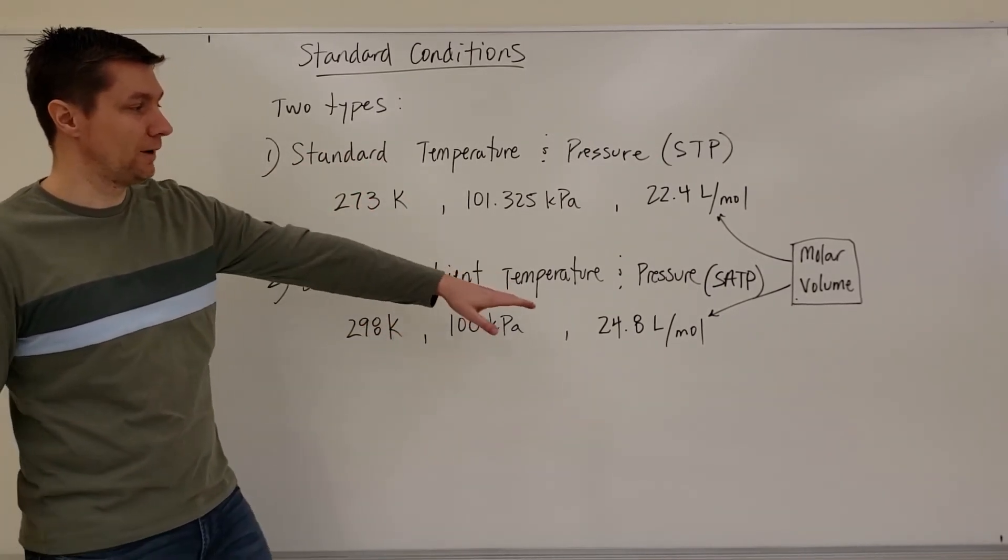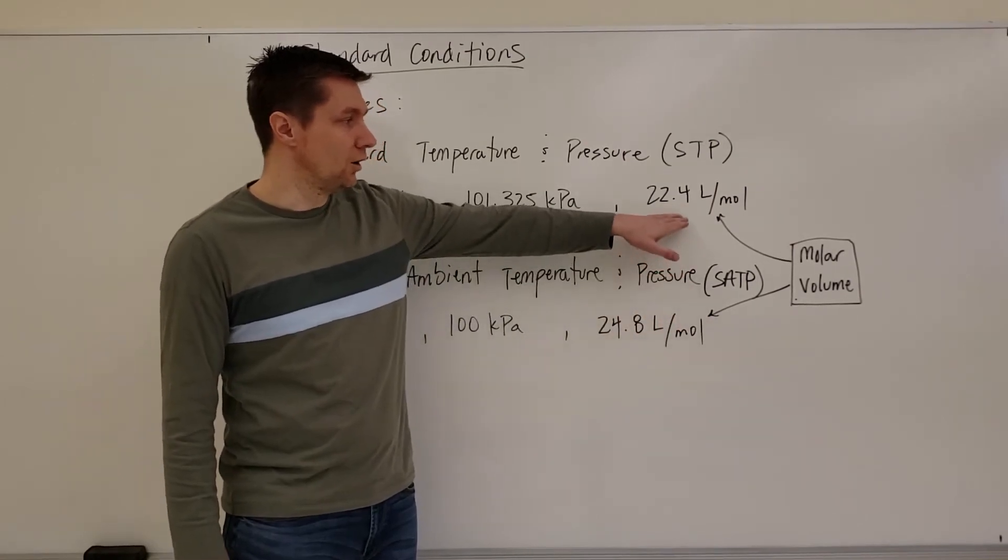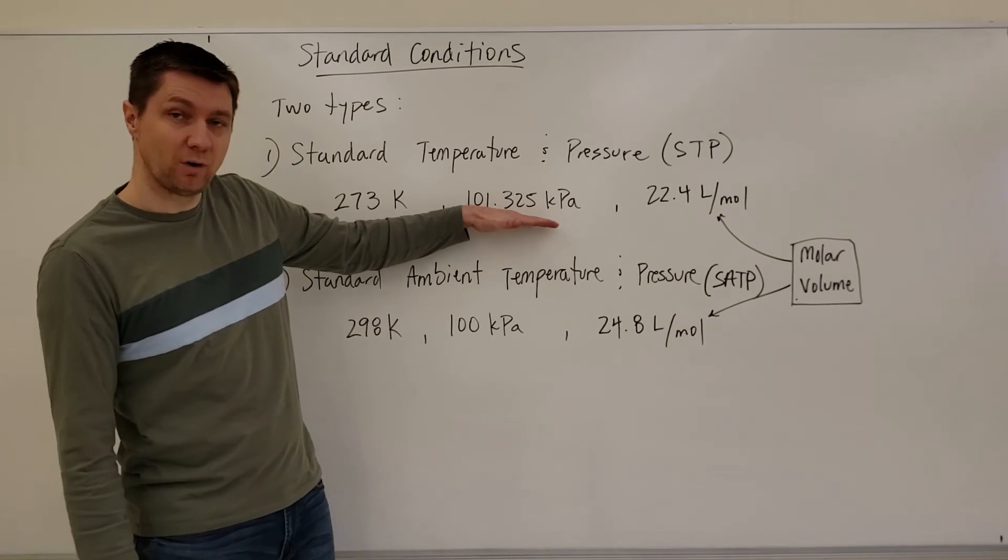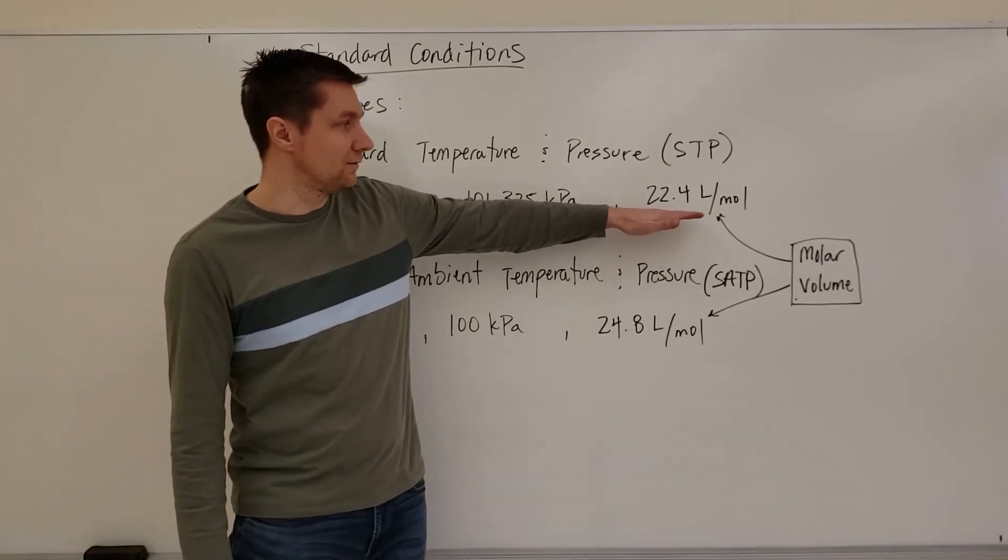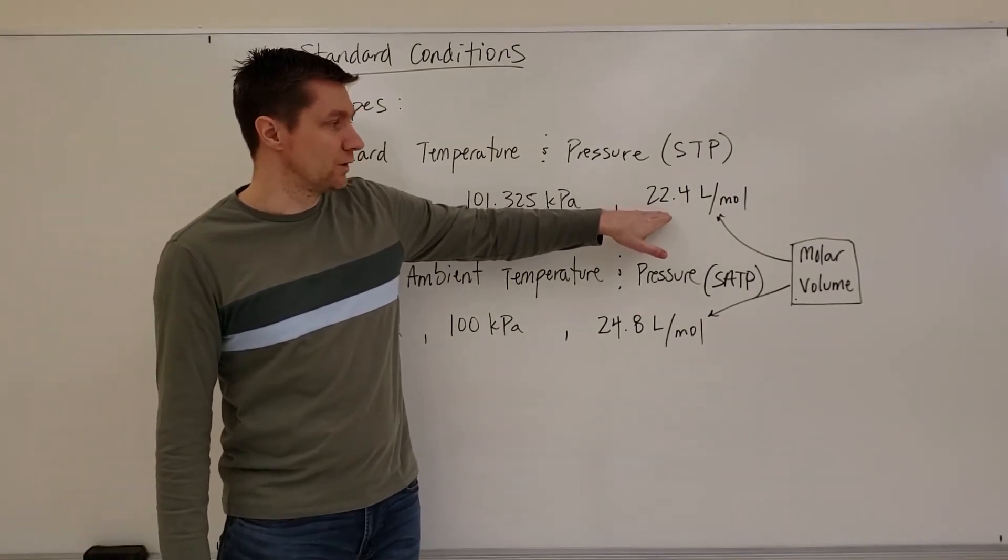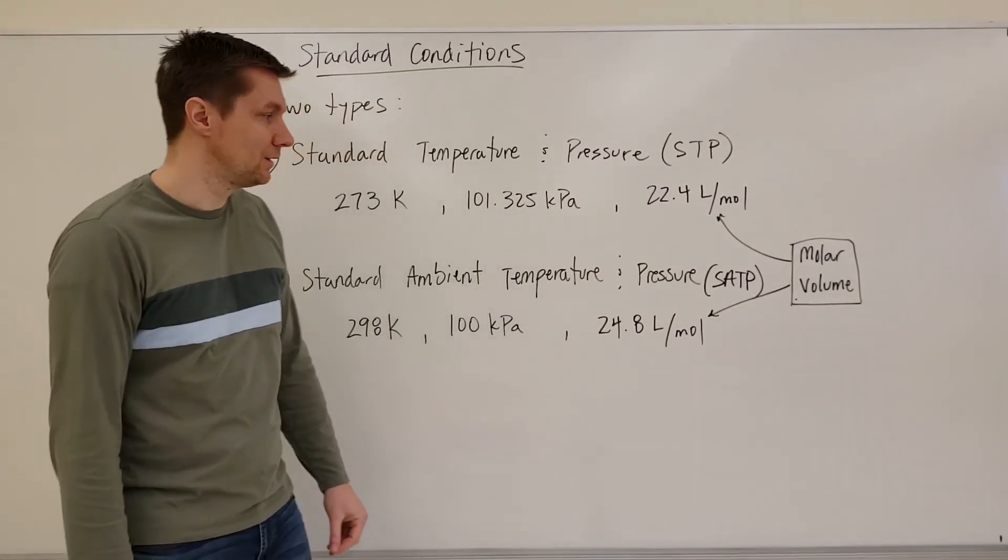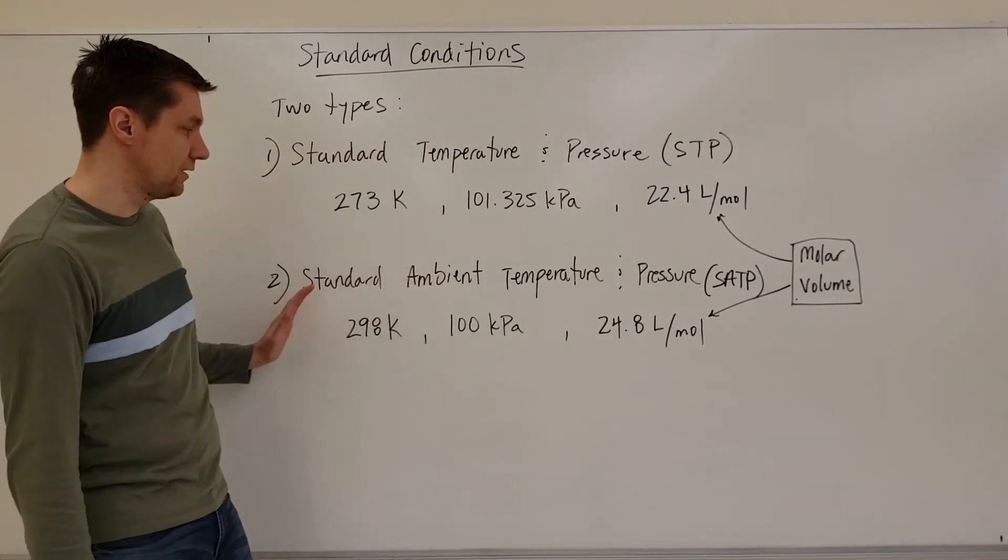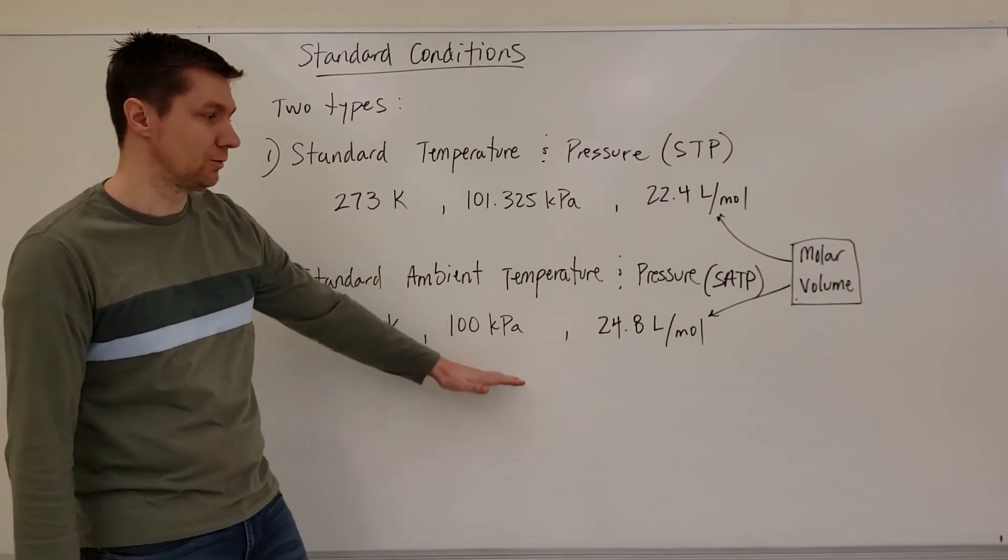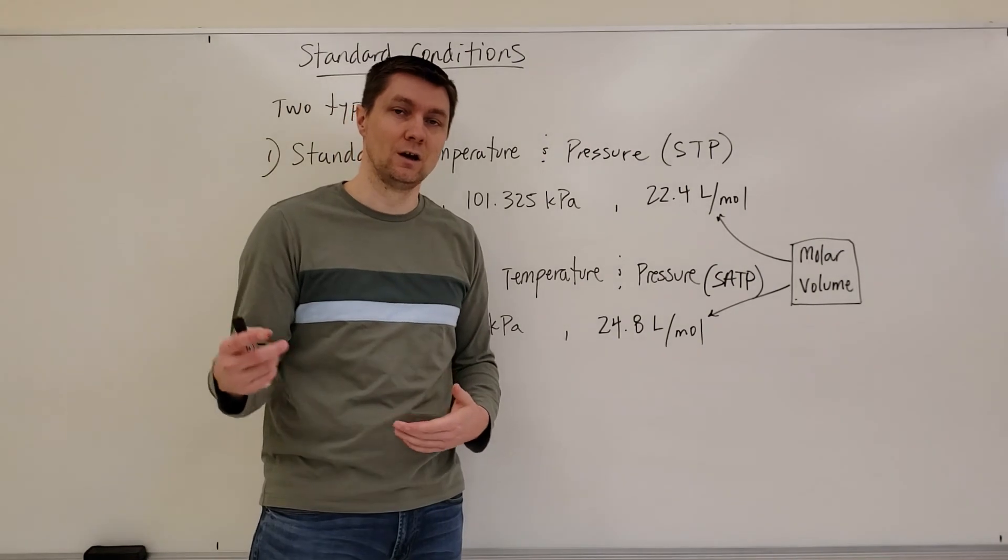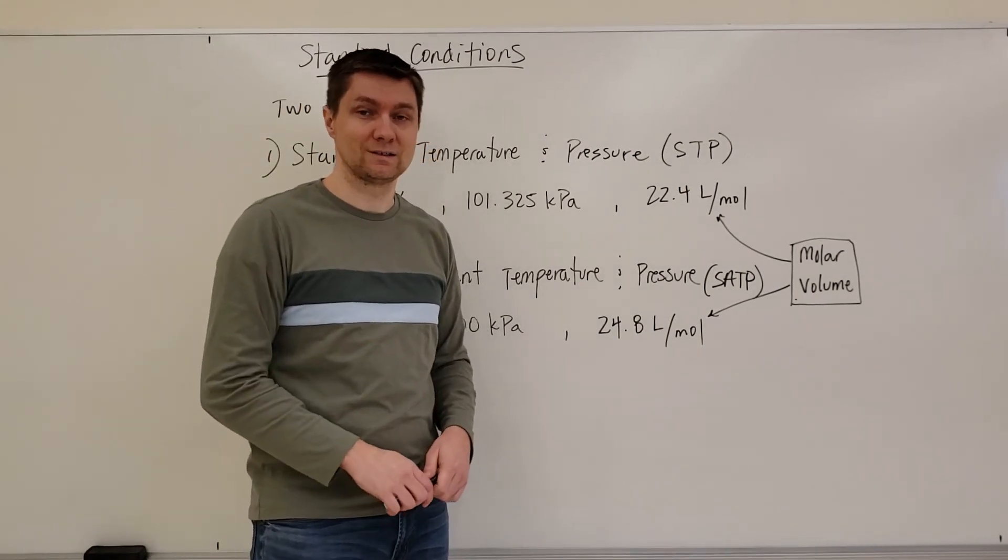Last thing I want to point out is this molar volume number here. All this is just saying is that when a gas is at this temperature and this pressure, it is going to have a volume of 22.4 liters for every mole of that gas. And then for this condition right here, SATP at this temperature and pressure, that gas is going to have a volume of 24.8 liters for every mole of gas that you have.